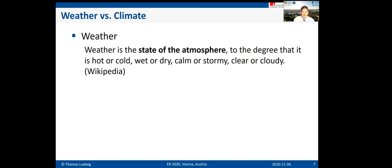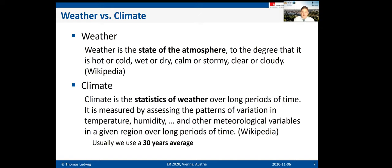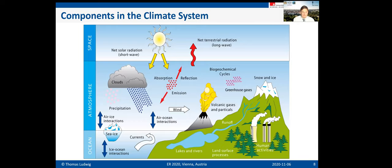Let me explain the difference between weather and climate, as it may not be known to everybody. When we look outside our window, the state of the atmosphere — cold or hot, wet or dry — that is weather. Climate, in contrast, is the statistics of the weather. That is important: climate is a mathematical construct; you cannot directly observe it. It is a statistical analysis over a longer period, usually averaged over 30 years.